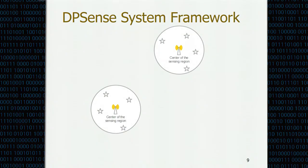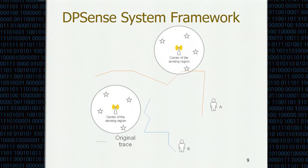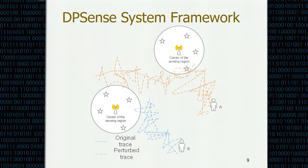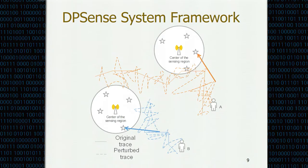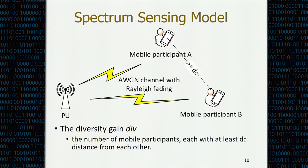This is how the DPSense system works. First, the SSP broadcasts all upcoming sensing tasks for a time window. Then mobile participants predict their future mobility traces and input them into the sensing devices. The sensing devices generate perturbed mobility traces based on that input and upload those perturbed location traces to the SSP. With knowledge of the perturbed location traces, the SSP is able to assign participants to sensing locations to perform real-time spectrum sensing.